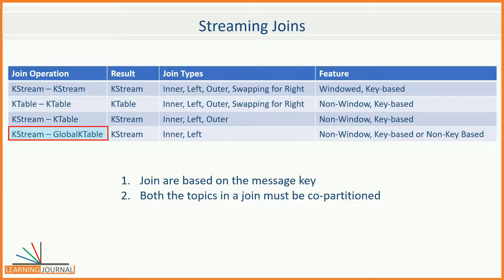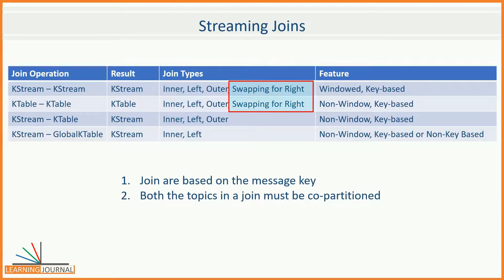There is only one exception to this rule, and that is again Global KTable. Co-partitioning is not compulsory for KStream to Global KTable joins, and that's obvious because all partitions of the Global KTable are made available to each instance — that is, each stream's task has a full copy of the Global KTable. Hence, co-partitioning is not needed for joining Global KTable. As listed in the table, inner joins and left outer joins are supported everywhere. But you must remember that Kafka does not have a method for implementing right outer joins. However, you can easily perform right outer joins by swapping the left and right side datasets. But this swapping is only allowed with KStream to KStream and KTable to KTable joins.